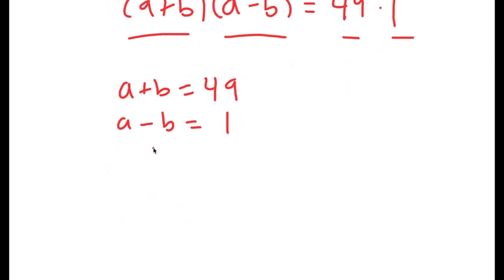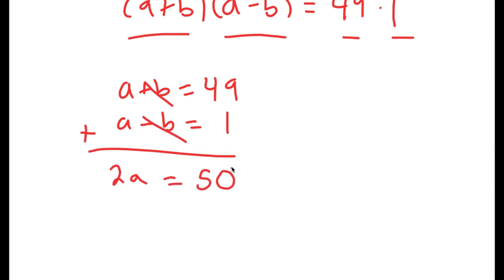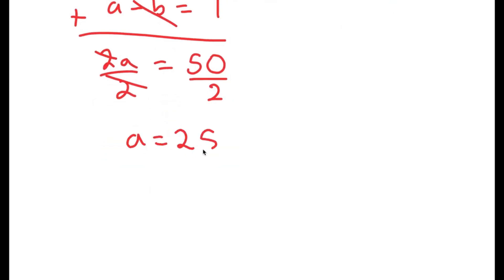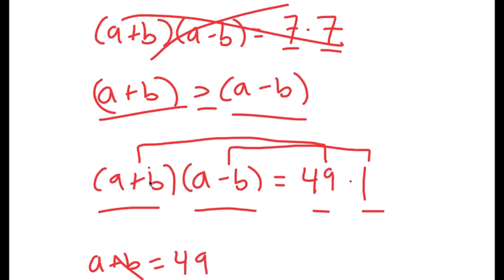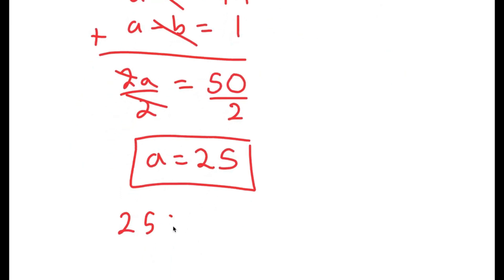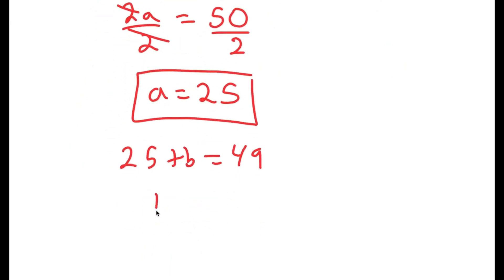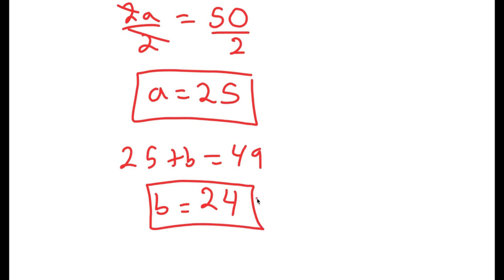So what we have here is a system of equations, and I'm going to add them. A plus a is 2a, b and negative b cancel out, and 49 plus 1 is 50. So I get 2a equals 50, and dividing both sides by 2, I get a equals 25. Now that we know a equals 25, and a plus b equals 49, we get 25 plus b equals 49, so b equals 49 minus 25, which is 24. So a equals 25 and b equals 24.